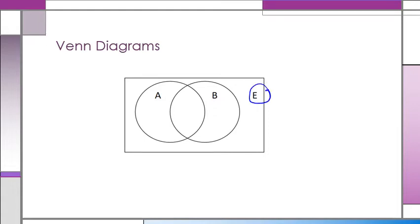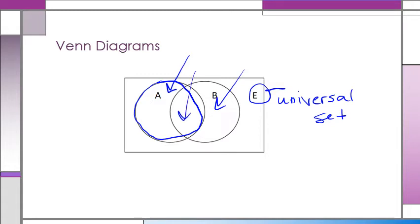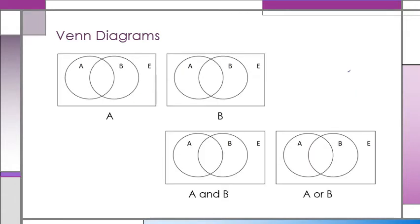We say that this E is what we call the universal set. This circle right here are things that are just in A, and these are things here that are just in B. Everything in between here means they're in both sets. Things that are in A are going to be in this circle here. Notice that some of them are also in B.